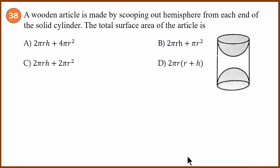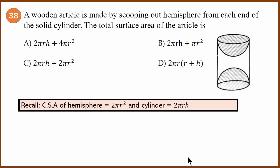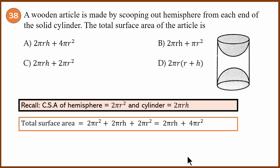Question 38: a wooden article is made by scooping out a hemisphere from each end of a solid cylinder. The total surface area is the curved surface area of the top hemisphere (2πr²) plus the curved surface area of the cylinder (2πrh) plus the curved surface area of the bottom hemisphere (2πr²). Adding all parts gives 2πrh + 4πr². The answer is A.